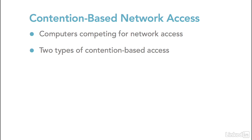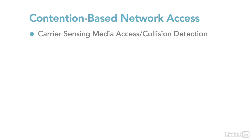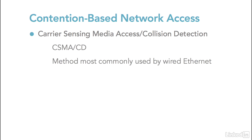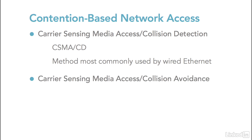One of those is the Carrier Sensing Media Access Collision Detection access method, also called CSMA/CD. This method is most commonly used by wired Ethernet installations. The other contention method commonly used is Carrier Sensing Media Access Collision Avoidance, also called CSMA/CA. This access method is most commonly seen in Wi-Fi networks.